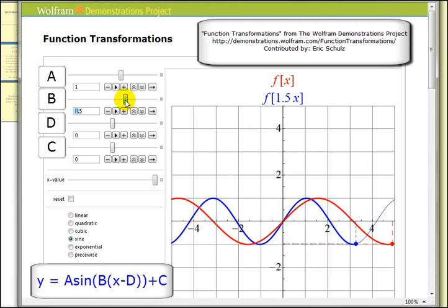And when B is less than one, greater than zero, you can see we have a horizontal stretch of our sine function.